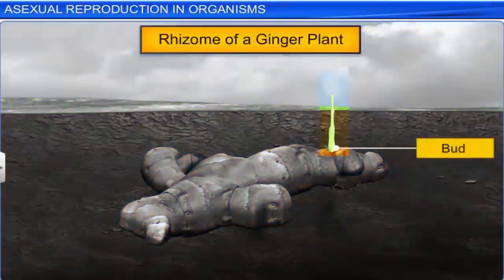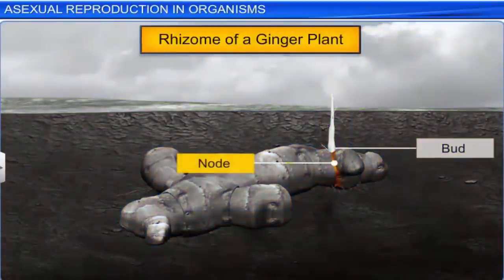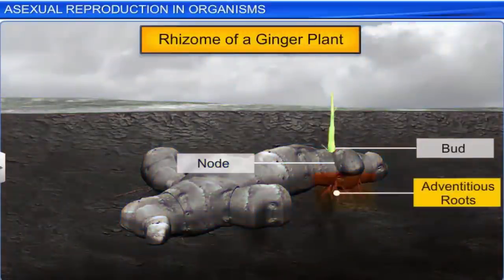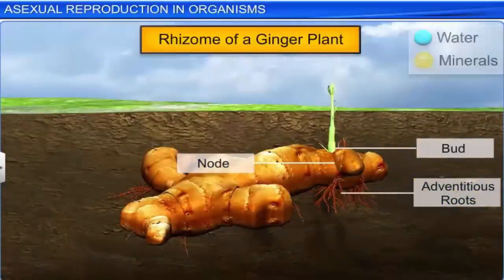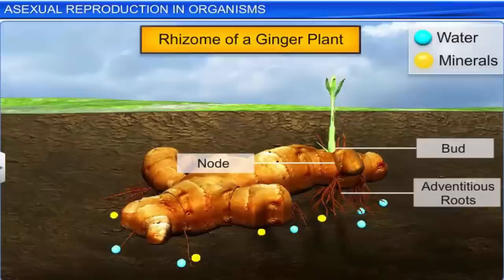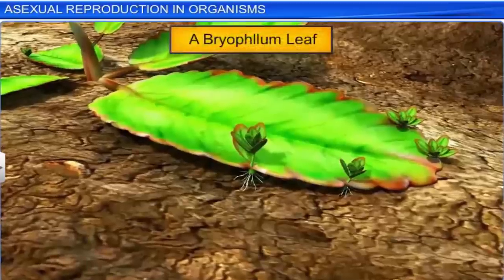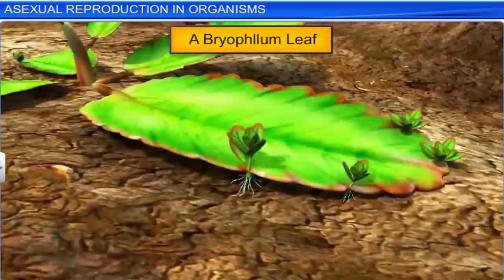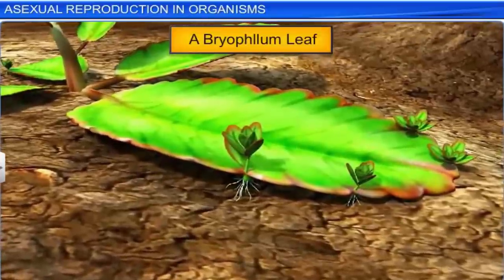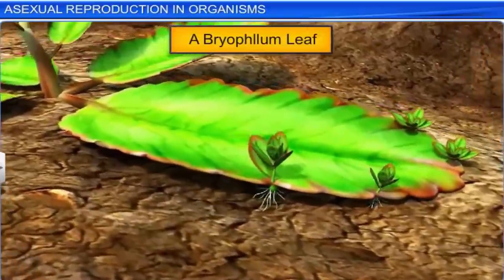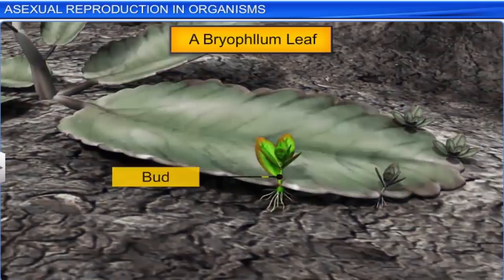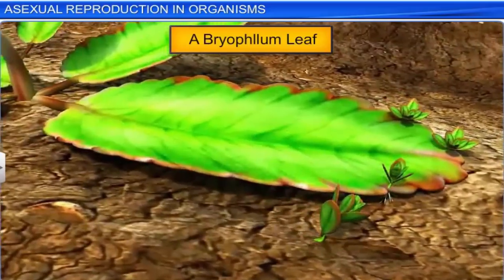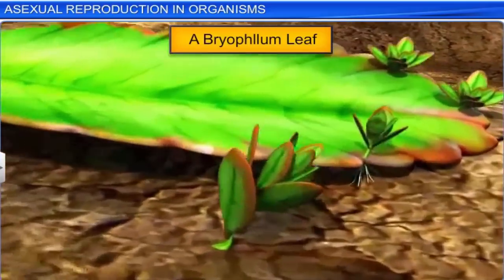While the buds develop into a new ginger plant, the nodes of the rhizome give way to adventitious roots, which help in the absorption of water and minerals from the soil. Bryophyllum, on the other hand, have notches on the margin of their leaves that give rise to adventitious buds, which fall off and later germinate into new plantlets.